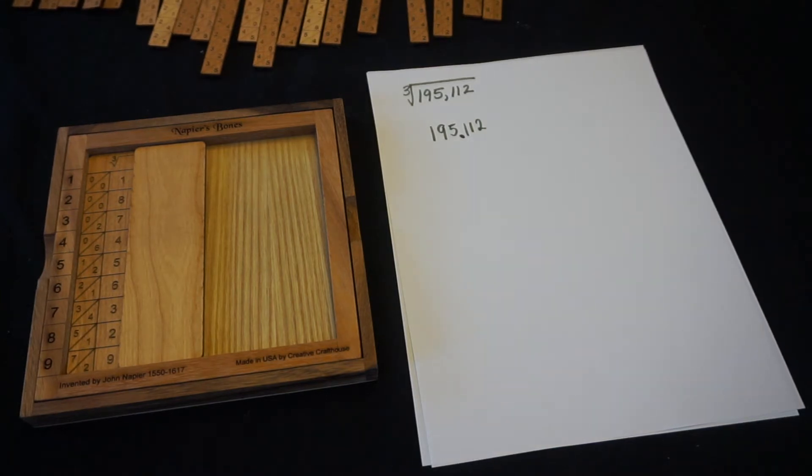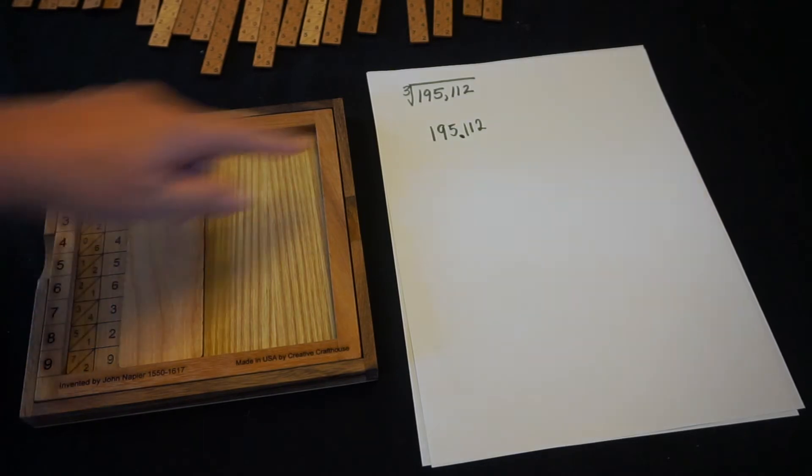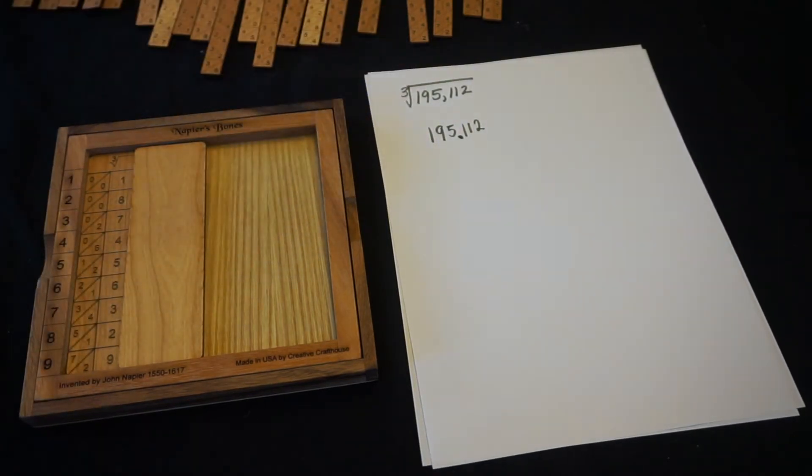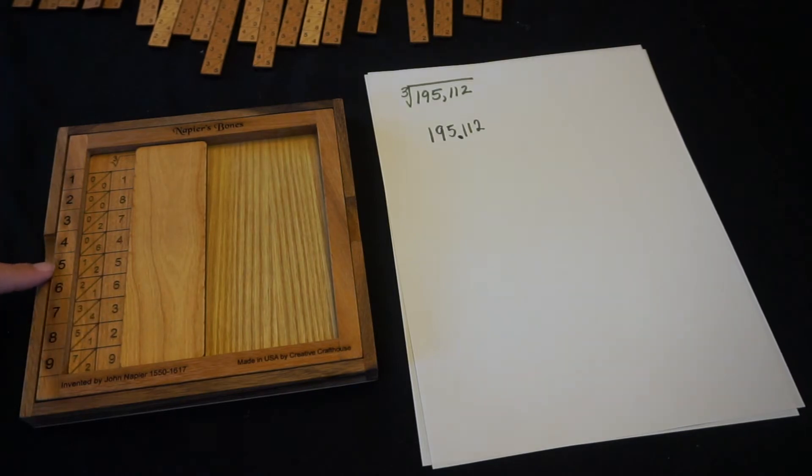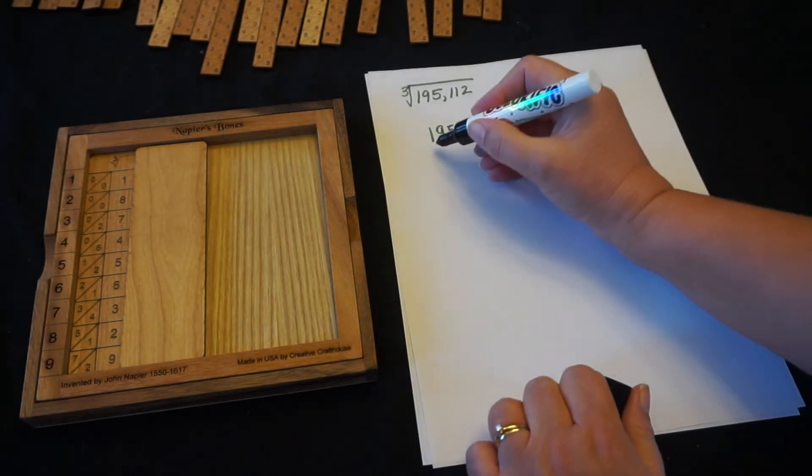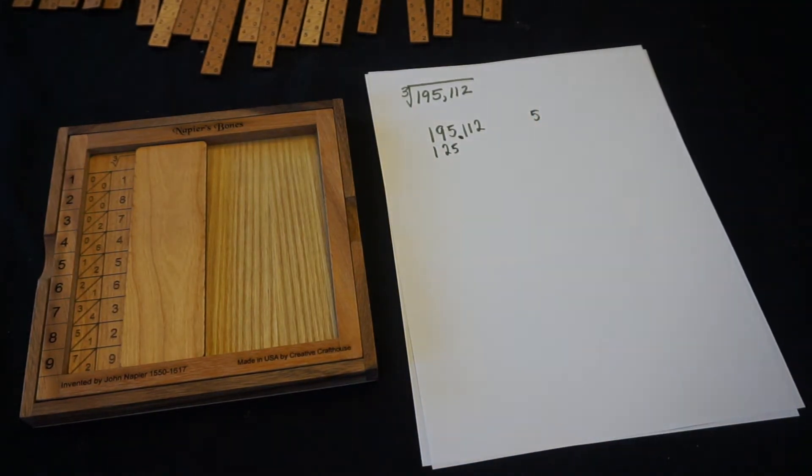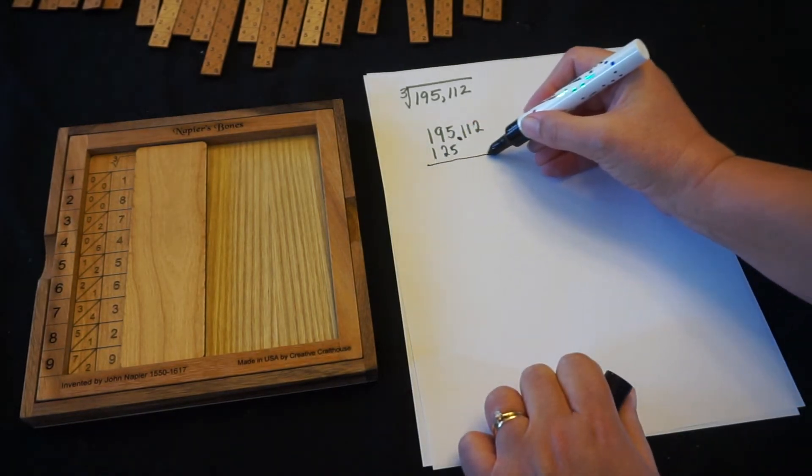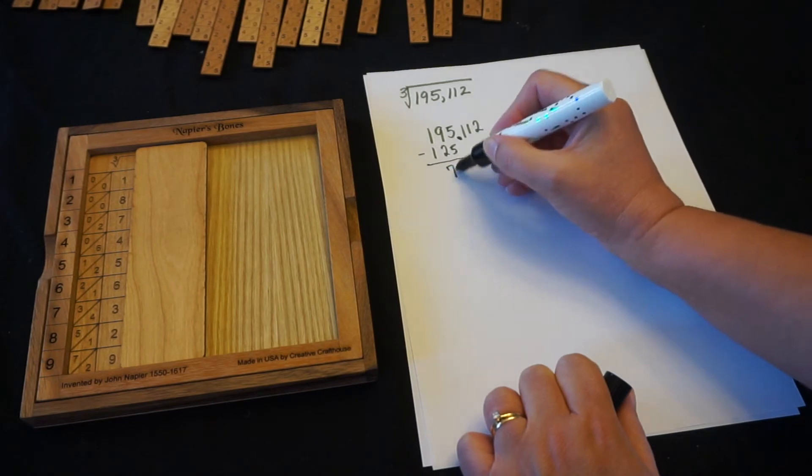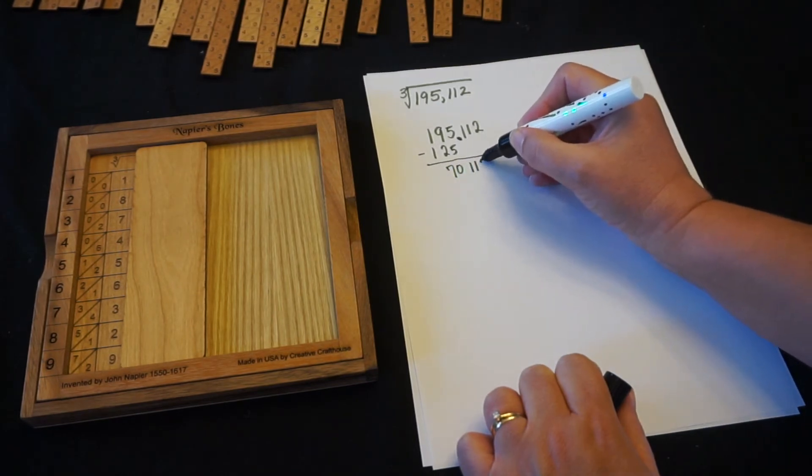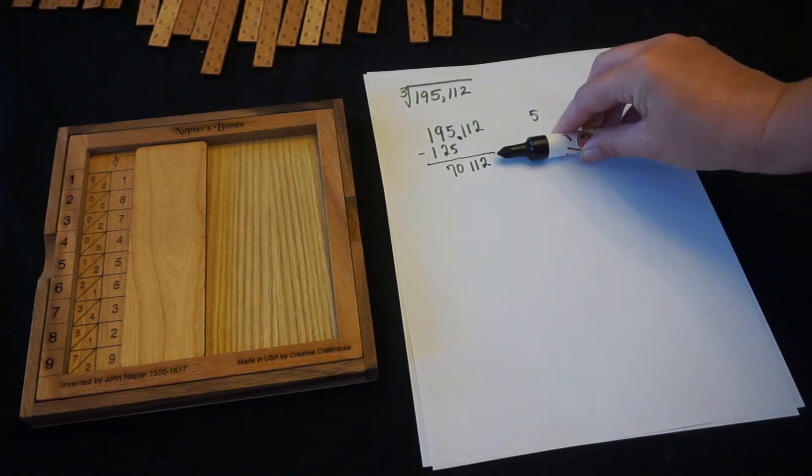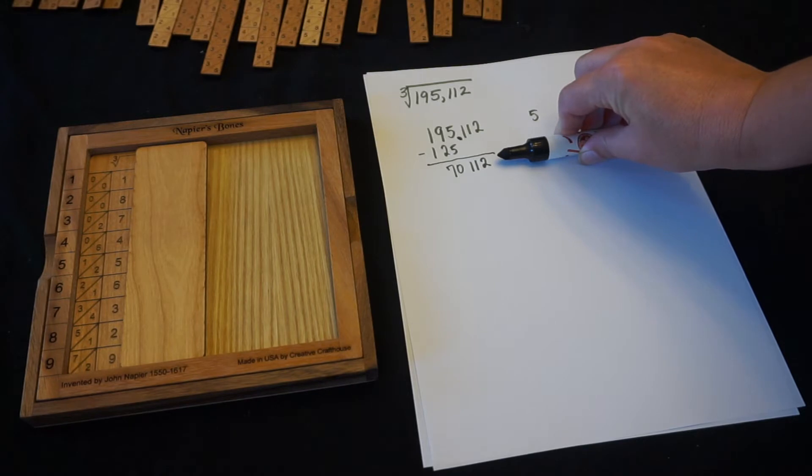So the next step is to work with this first triplet. Look at our perfect cubes and find the one that's closest to 195 without going over. Well, let's see. 6 cubed is 216. That's too high. 5 cubed is 125. So that's the closest to 195 without going over. 125. And that came from 5 cubed. So 5 is the first digit in our answer. Then we're going to subtract and bring down. So doing the subtraction gives me 70, but I bring down the 112. And I'm going to call this number here our first result because I'm going to need to refer to that a couple times and I want a name for it. So that's our first result.